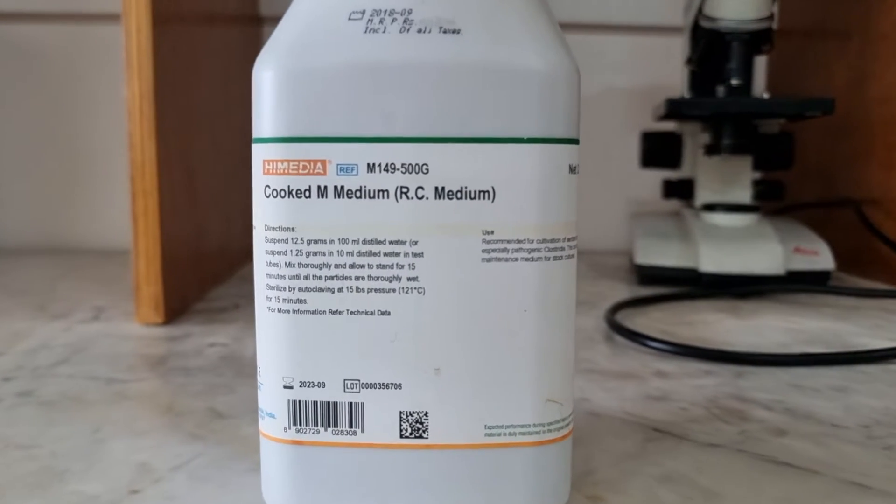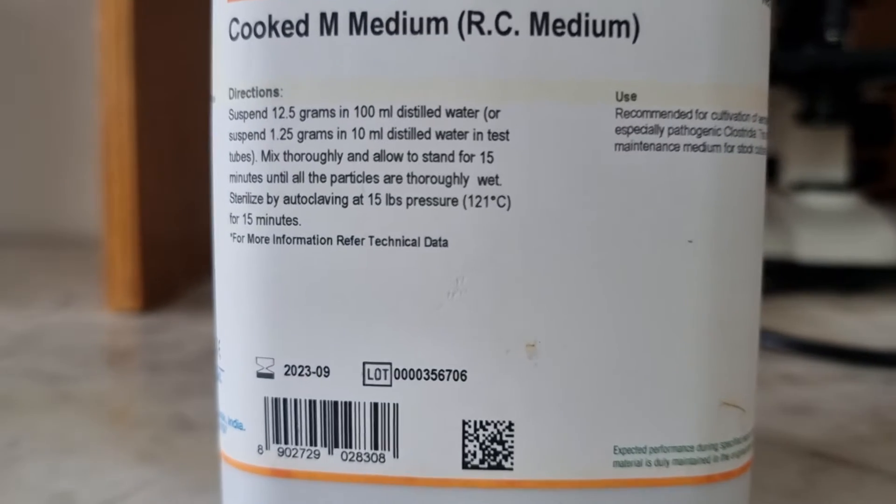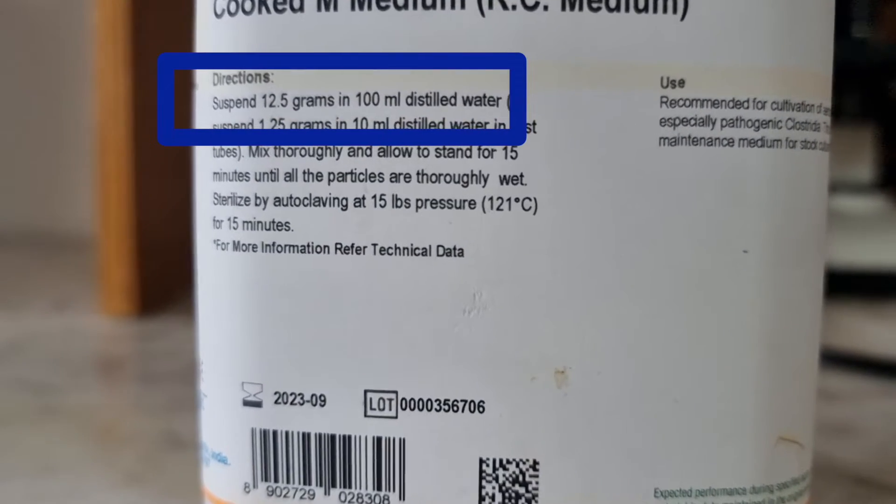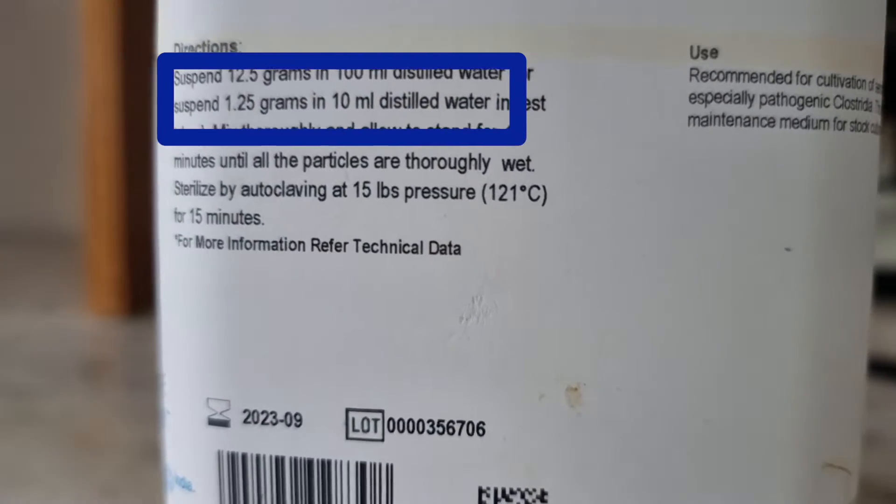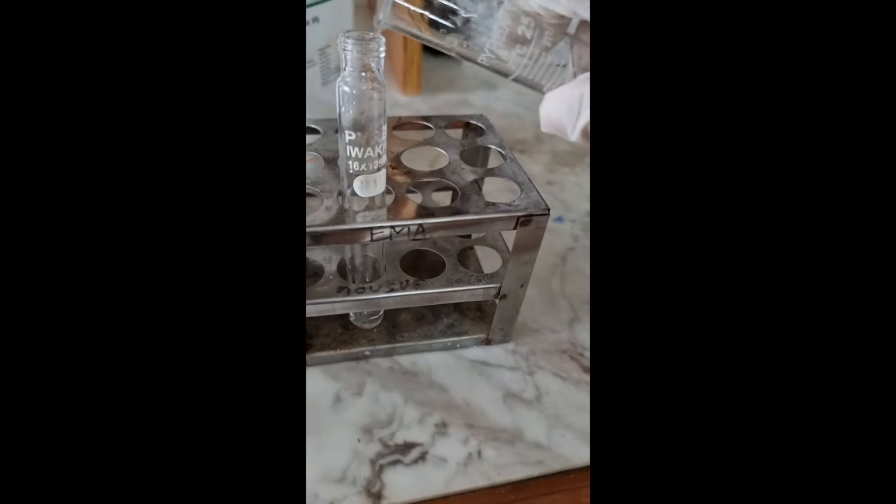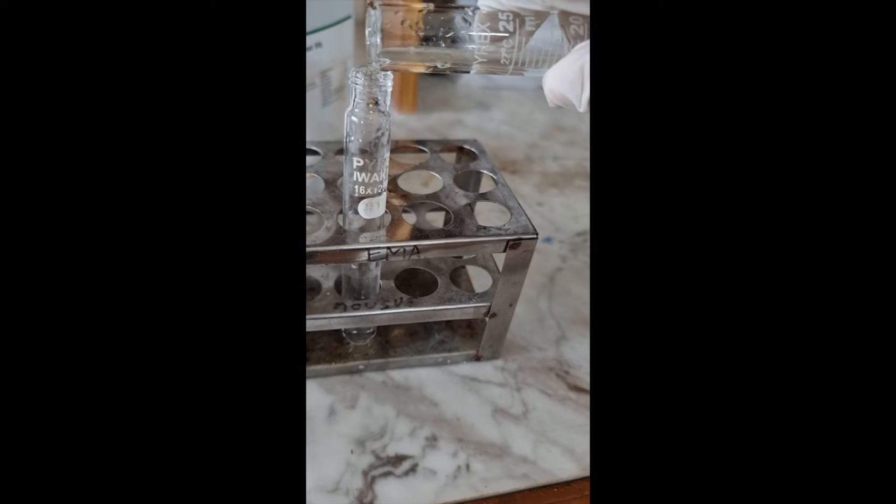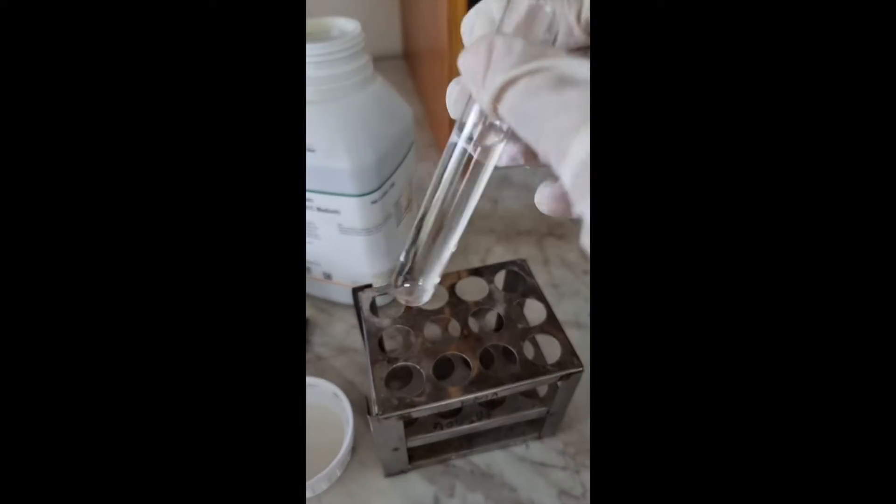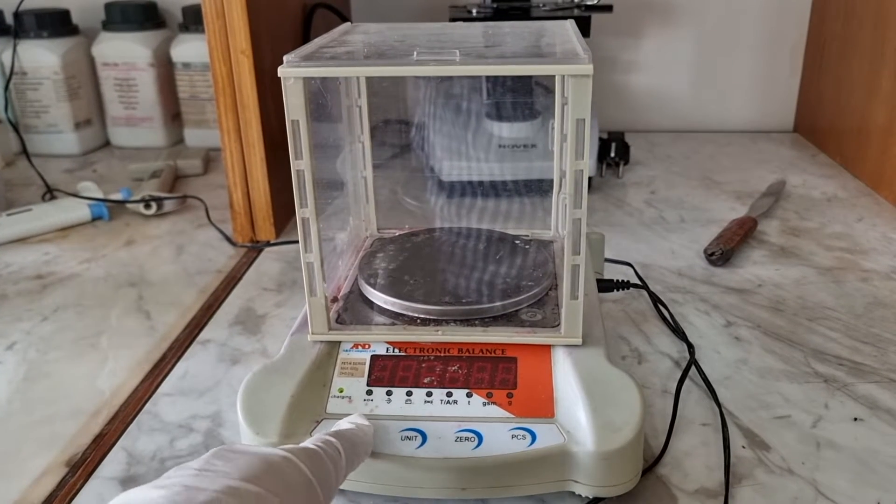Here is our Robertson's cooked meat media. We need to suspend 1.25 grams of the media in 10 ml distilled water and transfer it to the test tube in which we will mix the media.